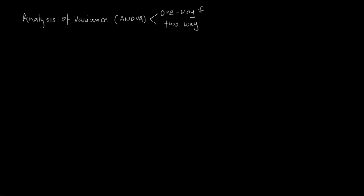We are going to understand it by doing a problem. Let's assume a situation where there are three drug manufacturers — three pharmaceutical companies: company A, B, and C. All three are in the process of developing a drug or tablet which controls blood pressure. Let's talk about blood pressure control.